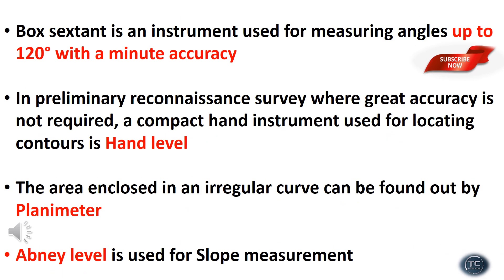The box sextant is an instrument used for measuring angles up to 120 degrees of accuracy. In a preliminary reconnaissance survey where greater accuracy is not required, a compact hand instrument used for locating contours is the hand level.